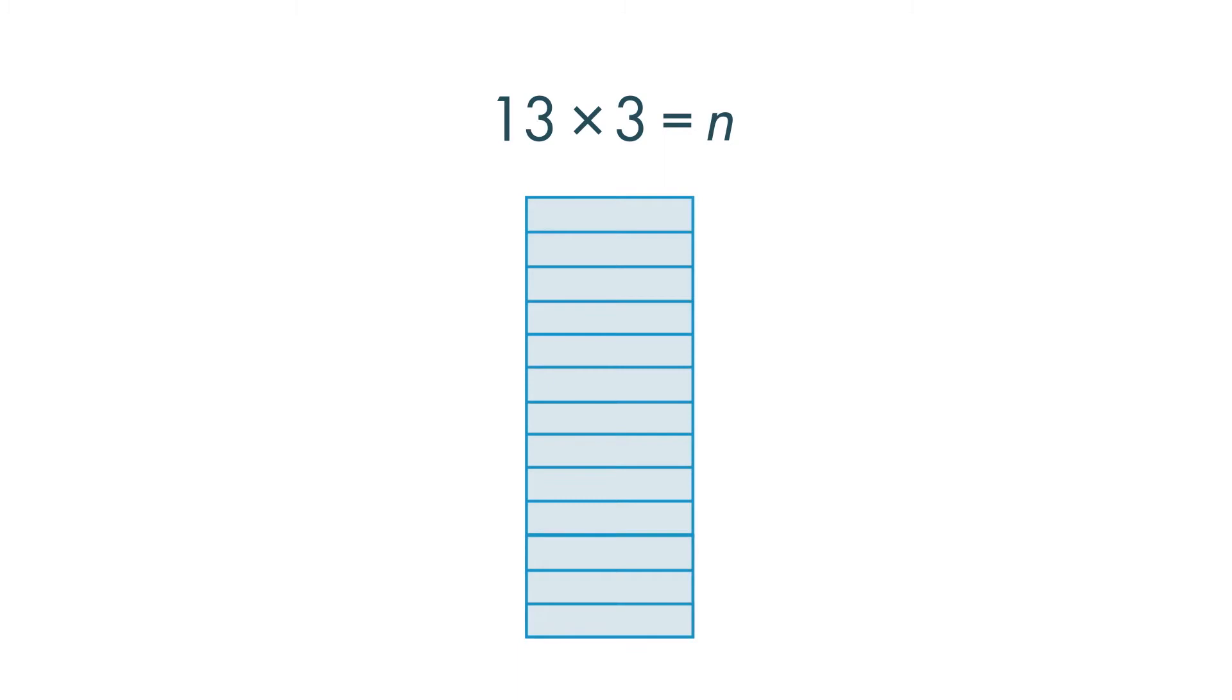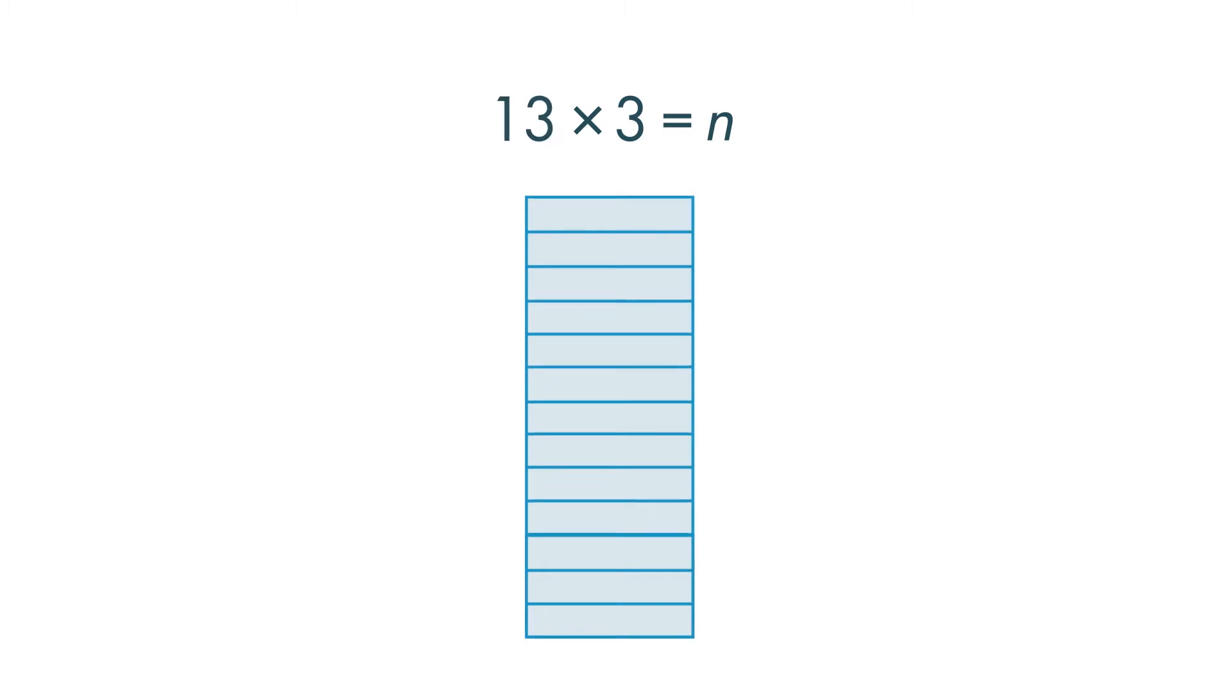We can use the distributive property to solve 13 times 3 is equal to n. We can break the larger number, 13, into two smaller numbers that add up to 13.